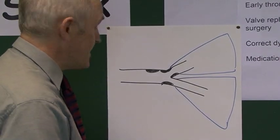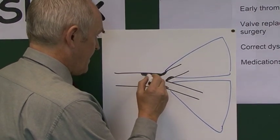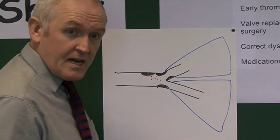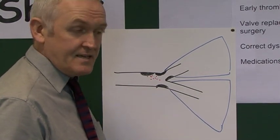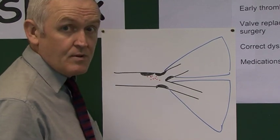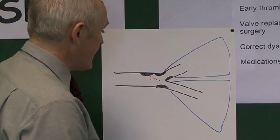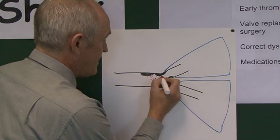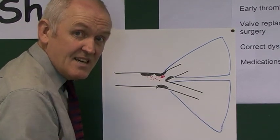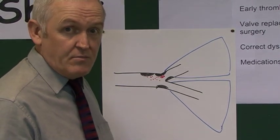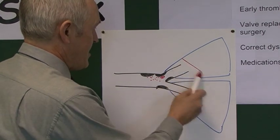Disruption of the roof of the atheromatous plaque, when the plaque has become unstable, triggers platelet aggregation. Many platelets stick together — we call this white thrombus — and this will reduce the blood supply to that area of myocardium.